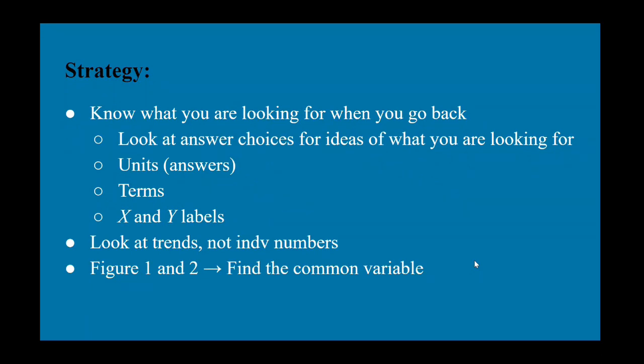And then know what you're looking for when you go back to the passage to find the answer. So you've read the question, you know what the question is, and you see your answer choices. So now go back using that knowledge to find which answers or which part of the actual passage would reflect the ideas of what you're looking for. So look for the answer choices of the idea you're looking for, look for the units in your answers, look for specific terms they may be asking for, and x and y labels. And then look at trends, not overall numbers. As I said earlier, this is more of a scientific reasoning test than a science test itself. So look at trends, look at what the overall data is trying to tell you, and that's where you should be able to extrapolate information. And then if you have multiple figures or graphs, then try and find the common variable so that you can relate them to each other.